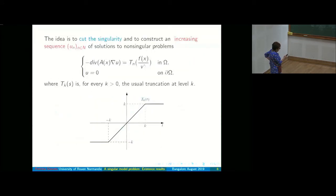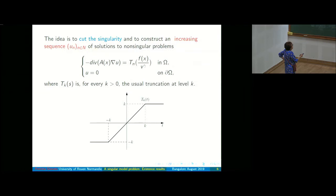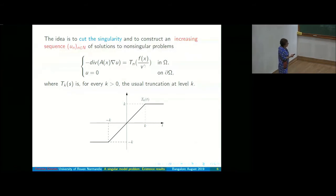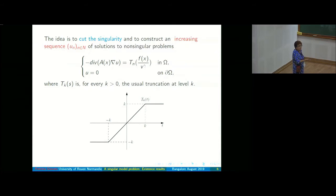If you replace F / U^γ by the truncation T_N of that, you no longer have a bad singularity because this is bounded. The singularity occurs when the solution approaches zero — then it goes to plus infinity — and we want to avoid that.